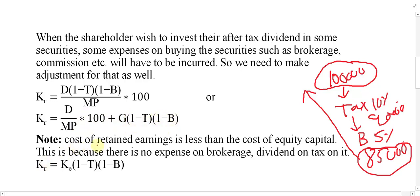Important note: the cost of retained earning is less than the cost of equity capital, because there are no expenses on brokerage or tax on the dividend when earnings are retained. The relationship is: Kr = Ke × (1 − t) × (1 − b). So if asked in the exam whether cost of equity or cost of retained earning is higher, the answer is that cost of retained earning is less, because the company pays return only on 85,000, not on the full one lakh. Please watch the next video to see how to solve questions.